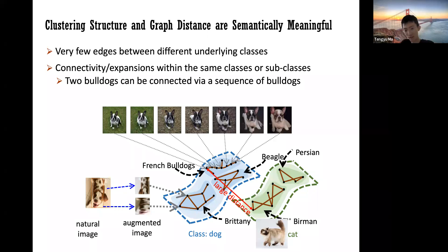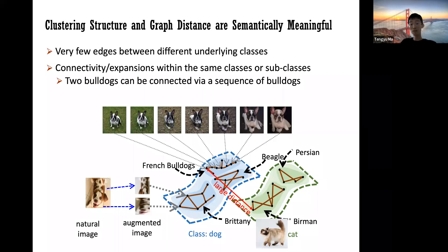The learning signal comes from two things: the augmentations and the data manifold structure. If your data covers the whole space uniformly, augmentations don't help much because everything is connected to everything. You need the data to come from some manifolds that are disconnected in some sense. And you need the augmentations to be meaningful — if augmentations can map anything to anything, this wouldn't work. The point is why very local augmentation information can be amplified to global semantic structure by the contrastive learning algorithm.